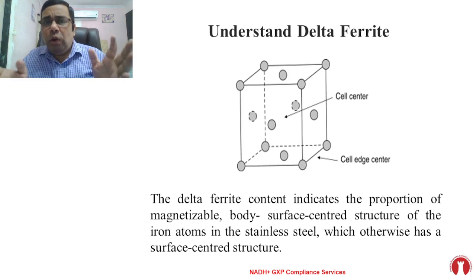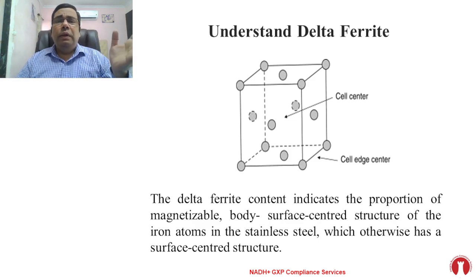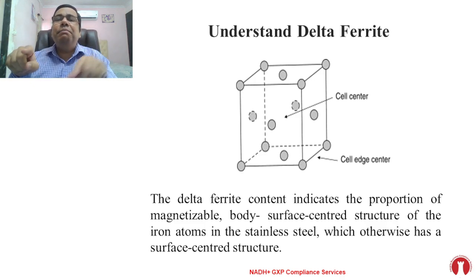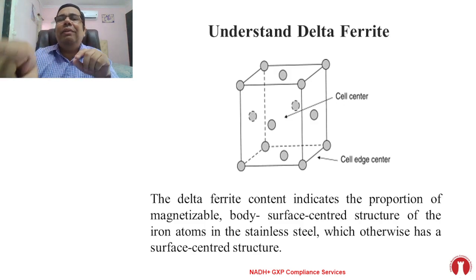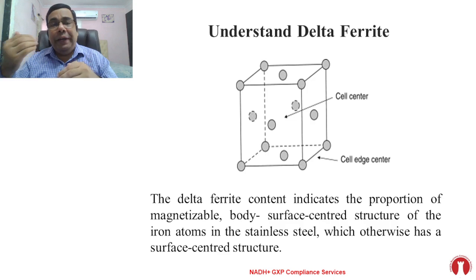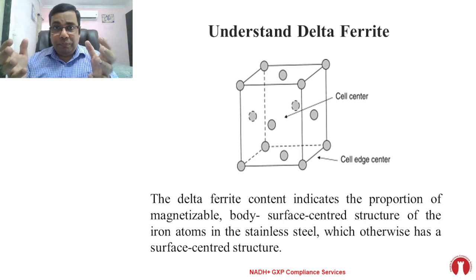I want to brief all of you about what delta ferrite is. You may not have heard this word before, but engineering people may be aware of it. Delta ferrite content indicates the proportion of magnetizable body-centered structure of iron atoms in stainless steel, which otherwise has a face-centered structure. Delta ferrite is one of the materials generated during welding or orbital welding operations on stainless steel, because stainless steel is composed of multiple different materials — it is an alloy.